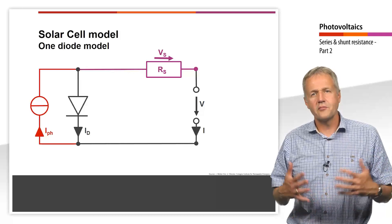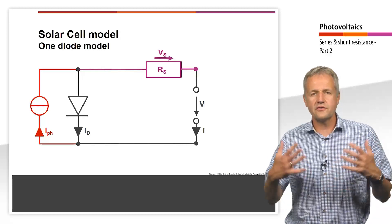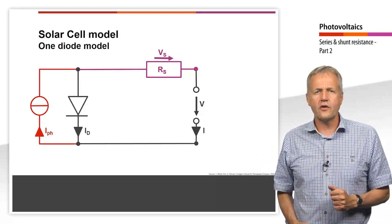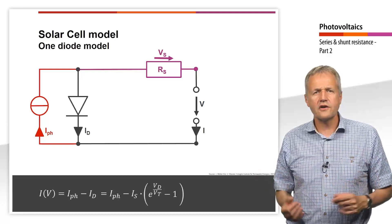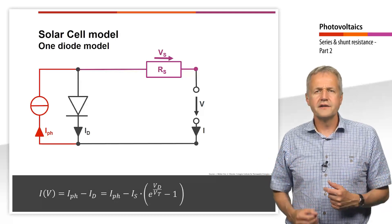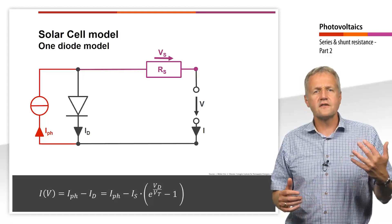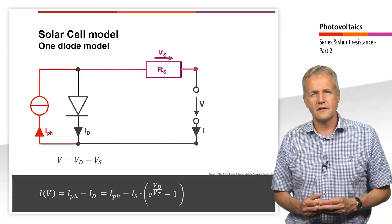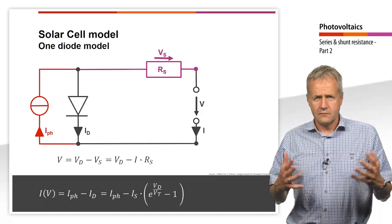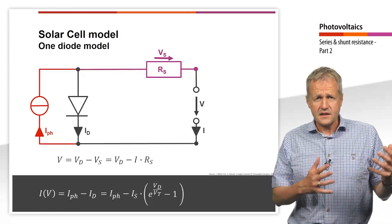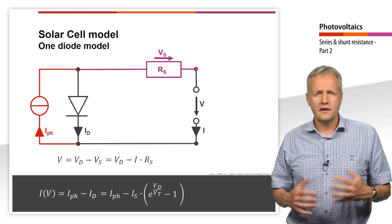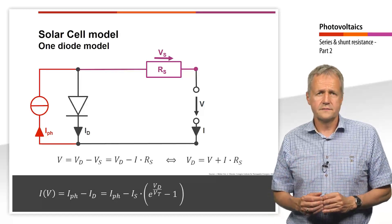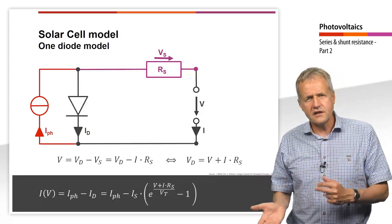Let's have a look at the mathematical description and implement the series resistance into the equation. For the ideal solar cell, the current at the terminal is the photocurrent minus the current flowing through the diode. We can express the diode current using the Shockley equation. Since there is now an additional voltage drop due to the series resistance, the diode voltage is the sum of the terminal voltage and the voltage drop across the series resistor. We now insert this expression into the diode equation.